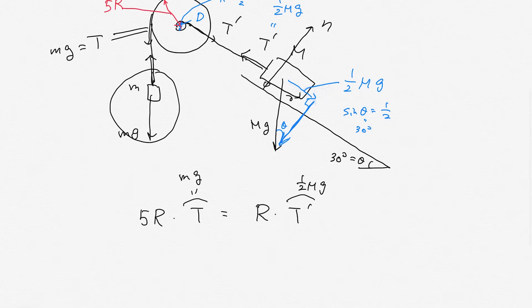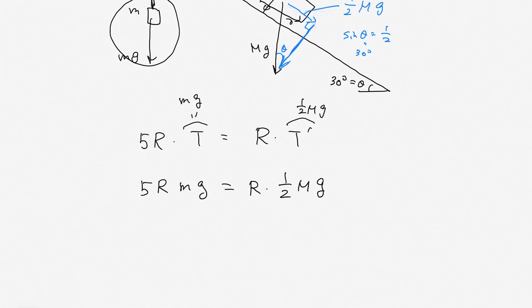Then you can substitute: 5R mg equals R times 1/2 capital Mg. From where these equations, then R appears on both sides, g appears on both sides, you can cancel.